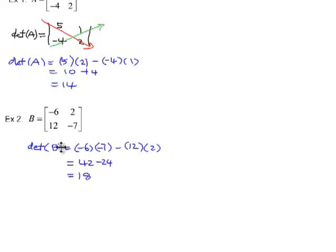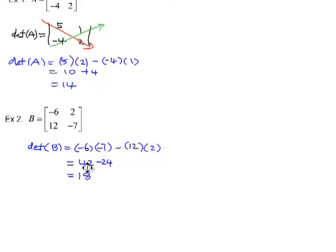Example 2: matrix B has entries negative 6 and 12 in the first column, 2 and negative 7 in the second. The determinant of B will be negative 6 times negative 7, minus 12 times 2. That is positive 42 minus 24, which gives you 18.